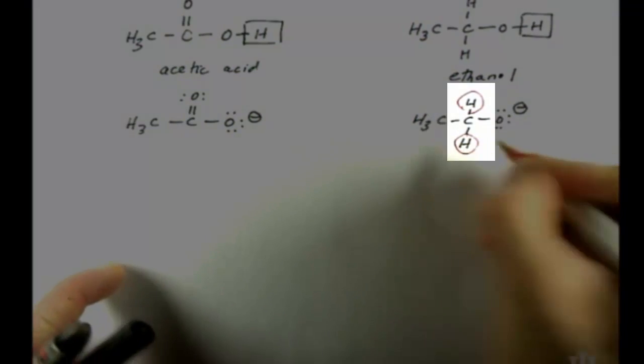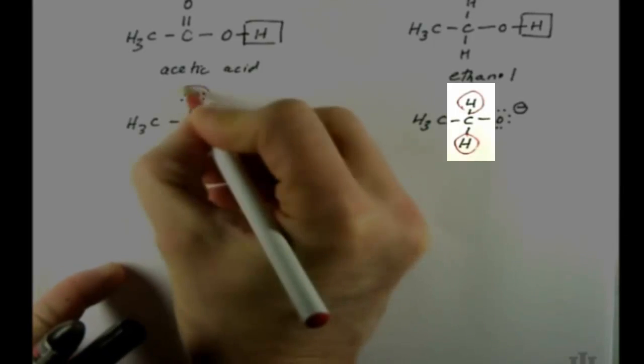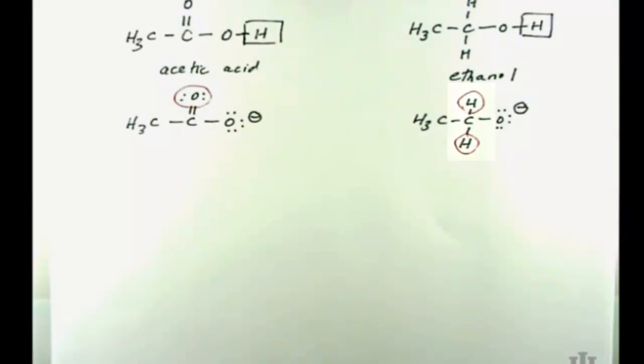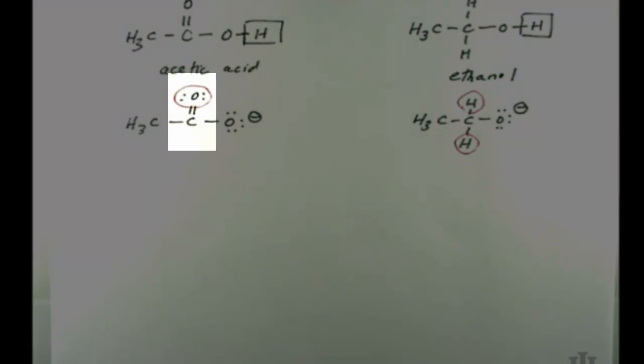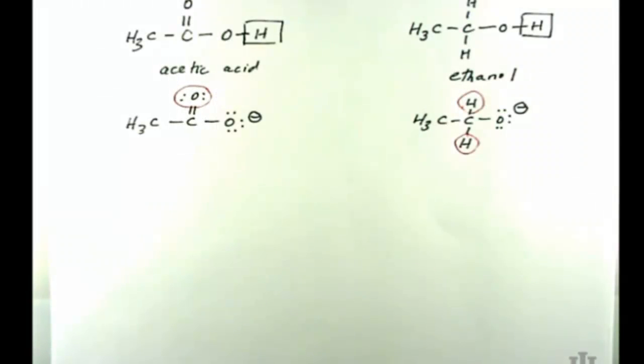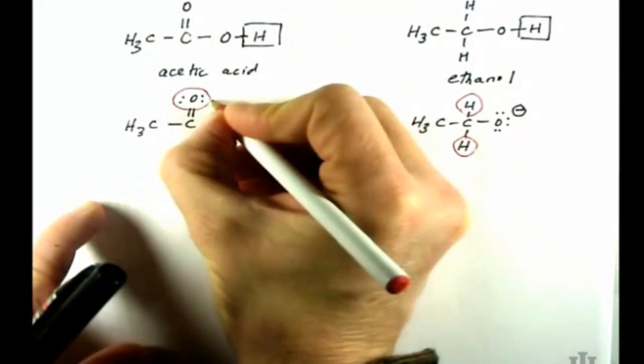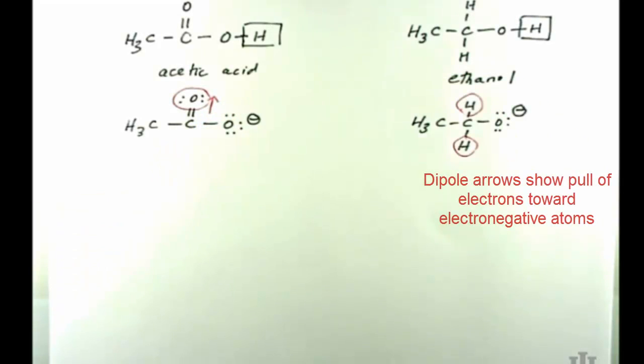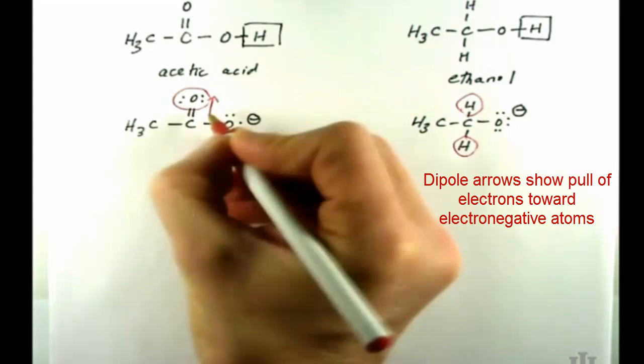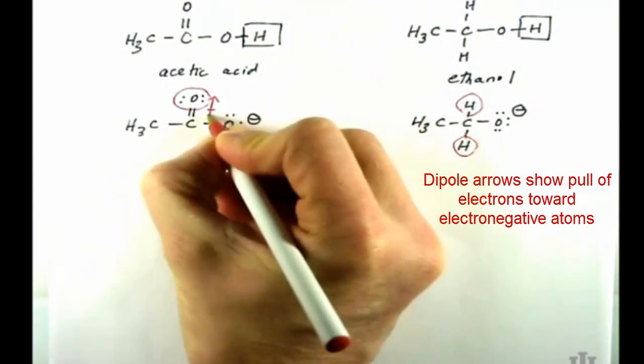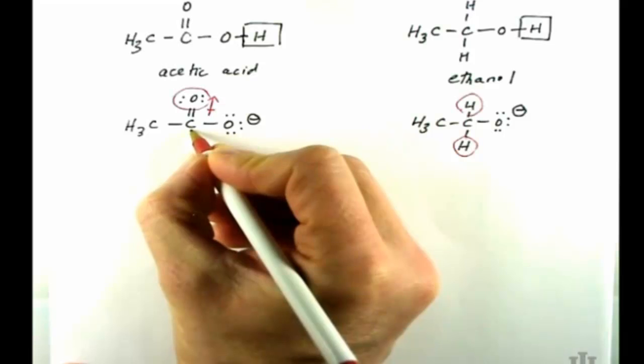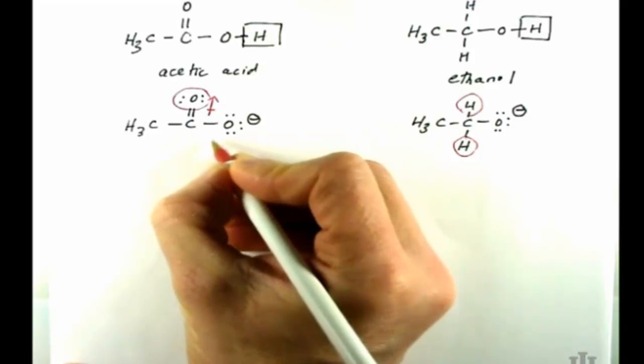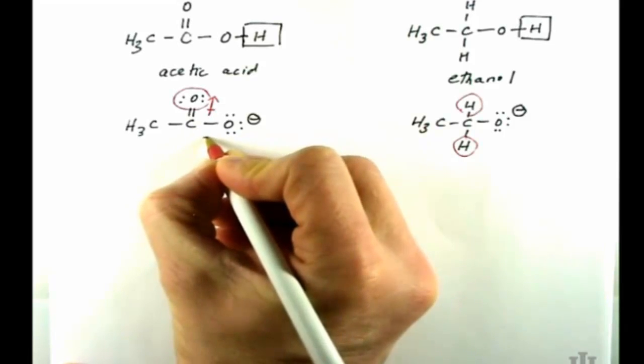What's changed is that the hydrogens here in ethanol are being replaced by an oxygen in acetic acid. So if I want to use inductive effect here, what I might do is say okay, I've got an oxygen now that's much more electronegative than hydrogen. It's going to pull electron density towards itself.